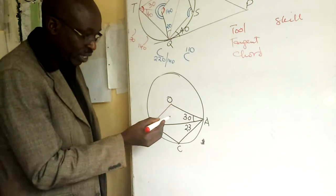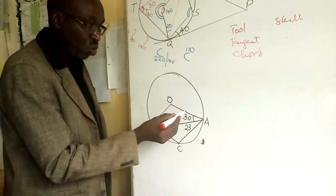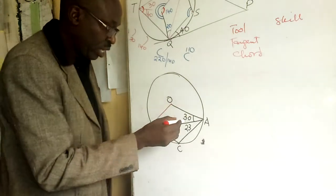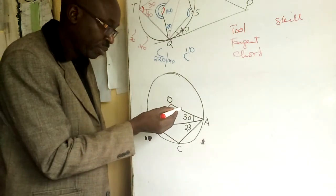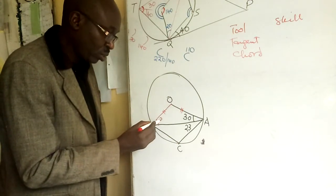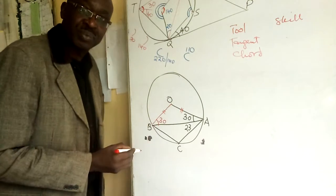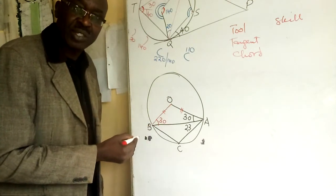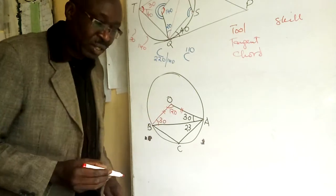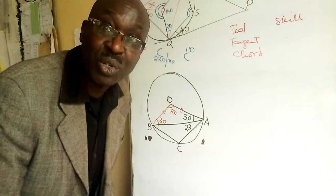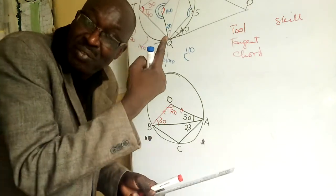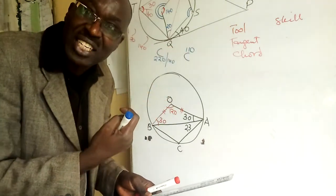Now if this is that, OAB is isosceles triangle. OAB is isosceles, so I can even put the mark. Giving me authority to put 30, 30. And 30 is 60, subtract from 180, you get 120.